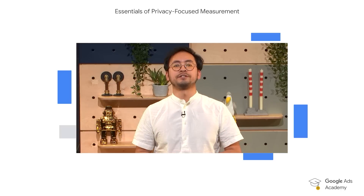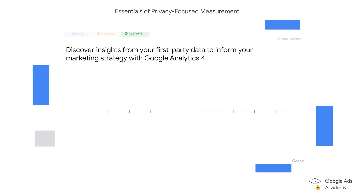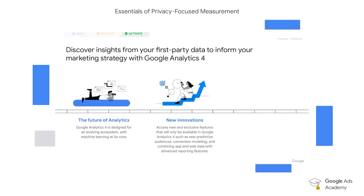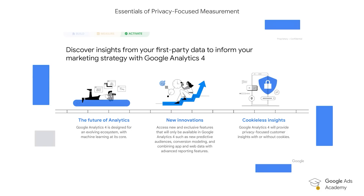Now let's talk about Google Analytics 4. GA4 will become your new platform when it comes to marketing decisions involving first-party data. Not only will it use conversion modeling to identify and report on customer insights, but it will also help you improve your automated bidding strategies and inform your wider marketing strategy. Google Analytics 4 is a new measurement solution designed to help you keep up with the changes within the ecosystem, and it sets you up for a future without cookies.